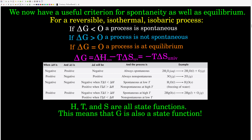If delta H is positive and delta S is negative, that means negative T times delta S is a positive number. Delta H is also positive, so no matter what the temperature, delta G is a positive number and that process will never be spontaneous — it's always non-spontaneous. These are just some examples over here.